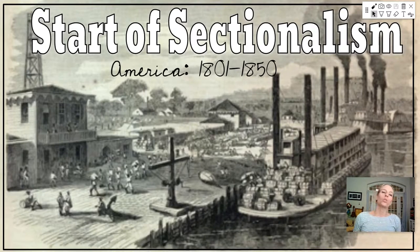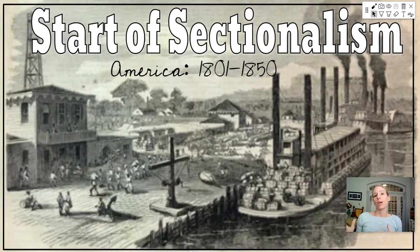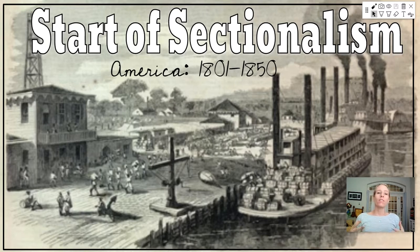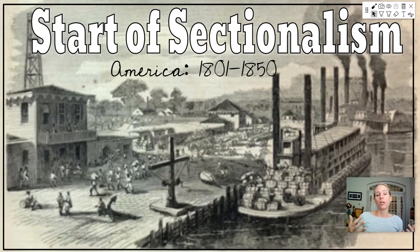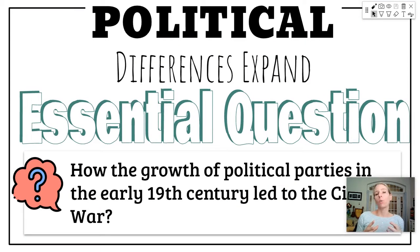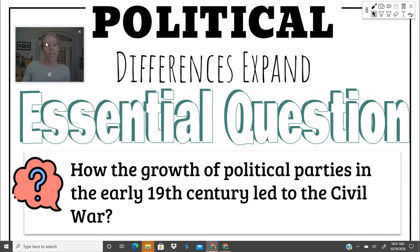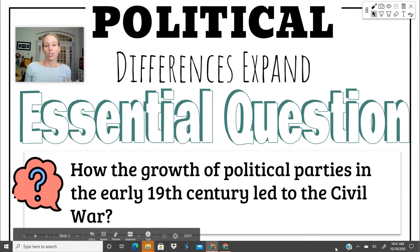Hello U.S. History students and welcome to the start of the sectionalism lecture. This is going to be a really big, broad lecture covering America from about 1800 to about 1850, right before the nation splits and we're heading towards war. The theme of this lecture is how America grows economically, socially, and politically apart in this roughly 50-year period. The first topic we're going to talk about is political differences, and the essential question is how the growth of political parties in the early 19th century led to the Civil War.